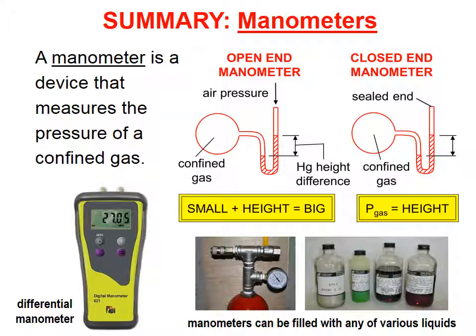Let's summarize manometers. A manometer is a device that measures the pressure of a confined gas. We talked about open-end manometers, which goes according to the equation small plus height equals big. We talked about closed-end manometers, where the pressure of the confined gas is simply equal to the height difference of the liquid column. We've shown you that not all manometers look like bulbs with stems coming out. Sometimes they look much more subtle, as in this differential manometer. And we don't have to fill them with mercury. We can fill them with any liquid we want.